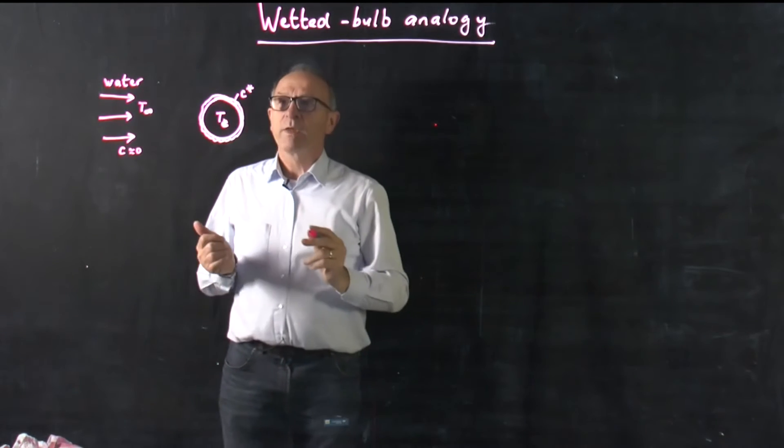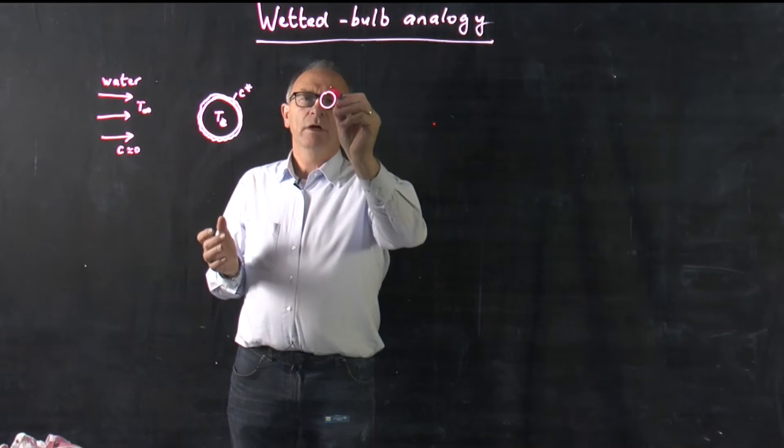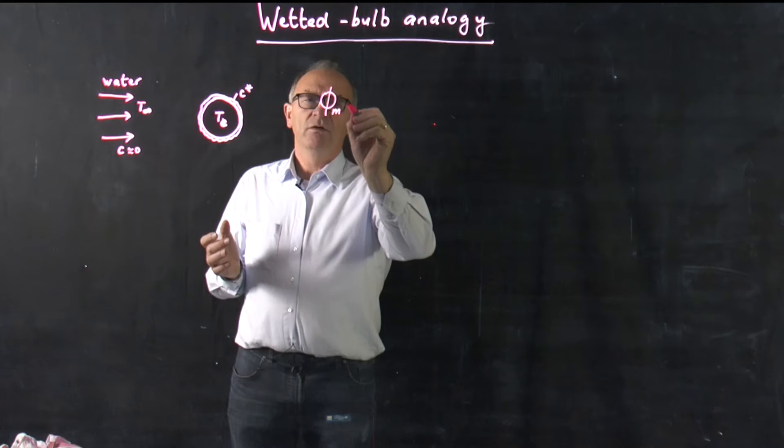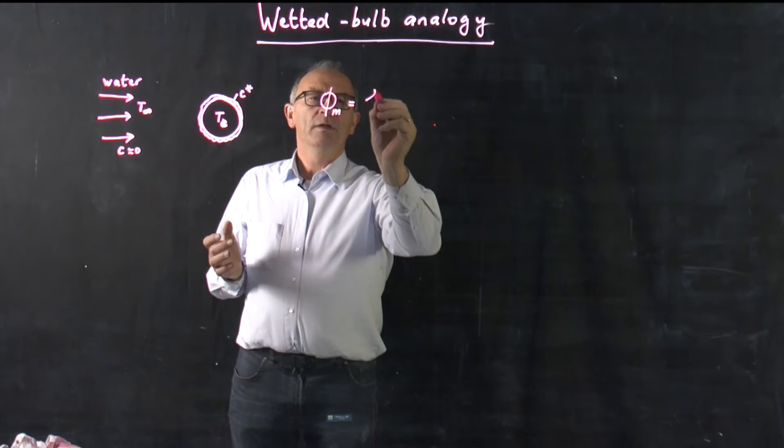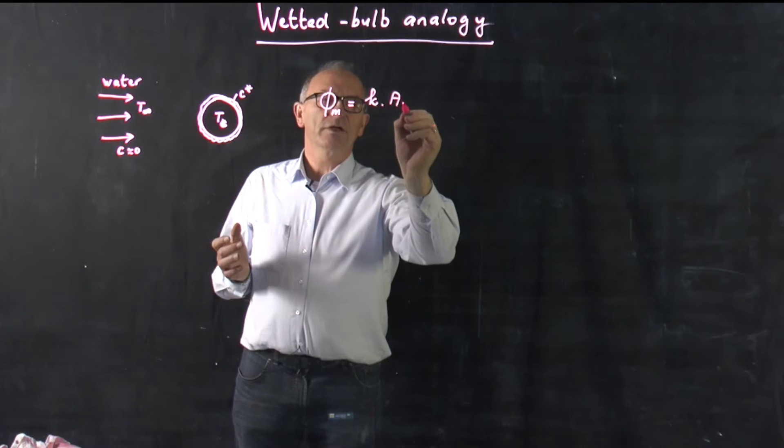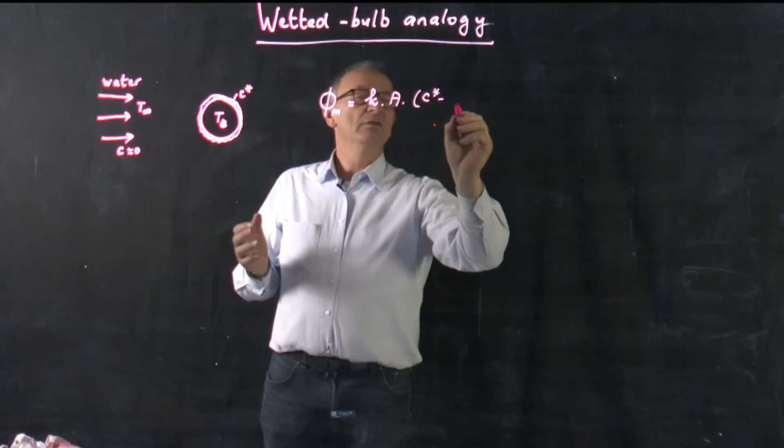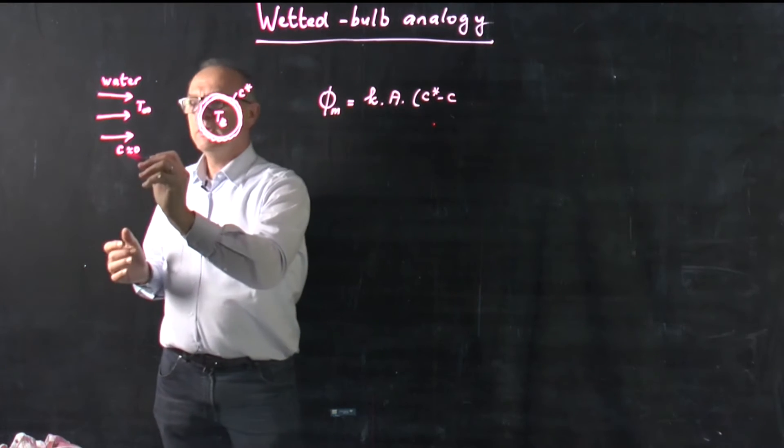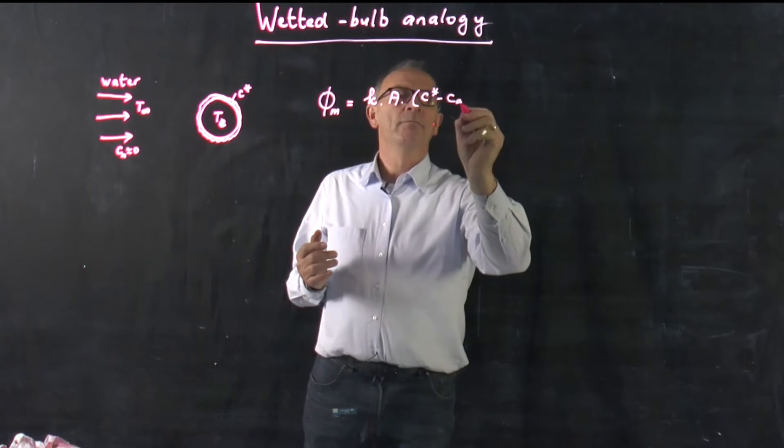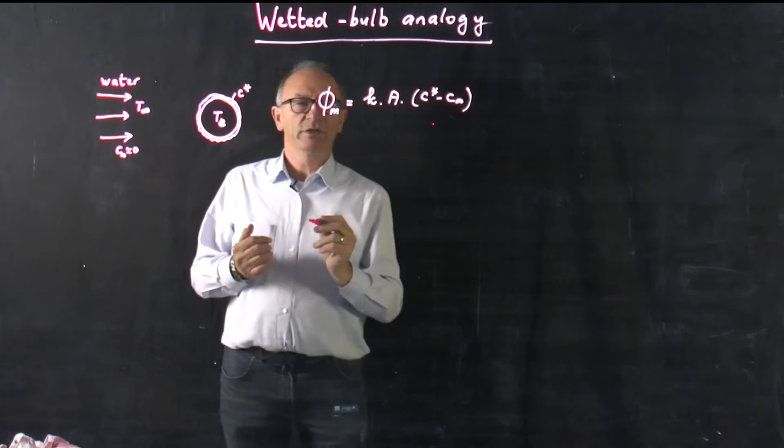And similar to the wetted bulb, you can rewrite a number of equations. You could say phi M is the heat mass transfer coefficient multiplied by the surface area multiplied by C star minus C infinity. But in this case you would immediately see that it becomes C star.